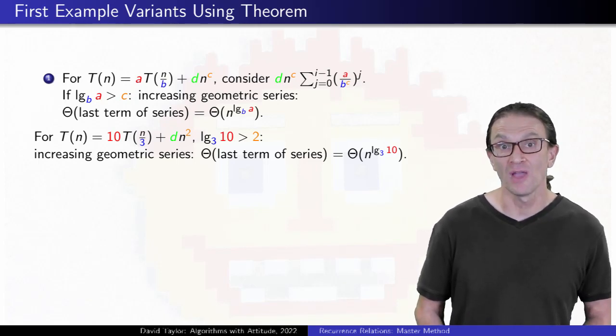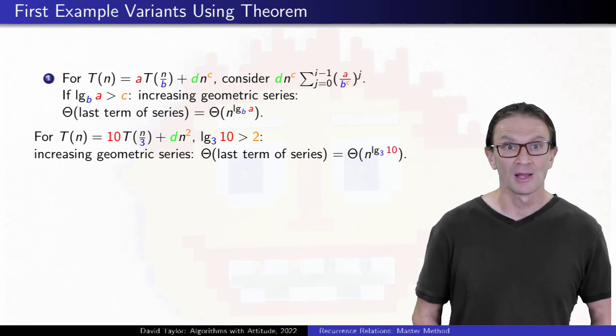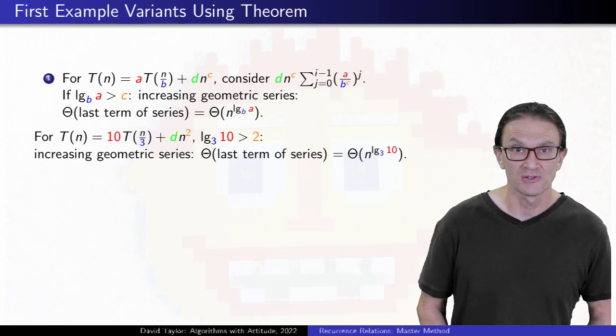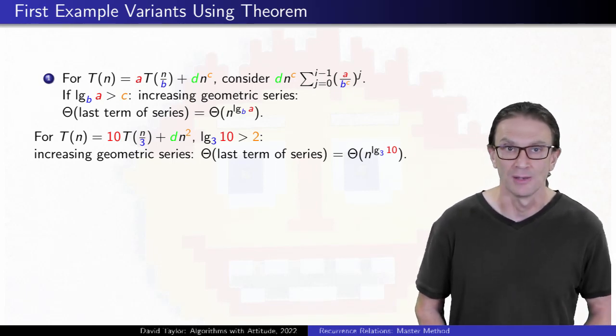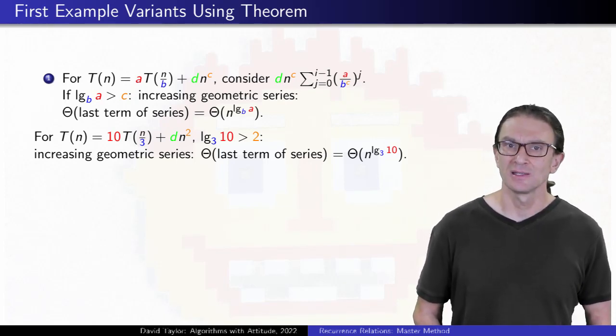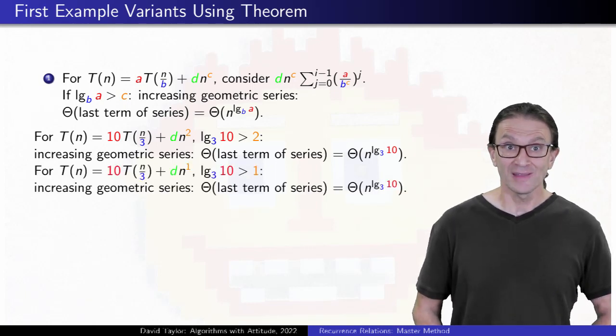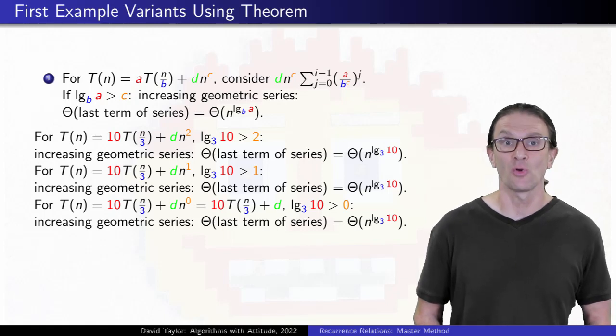Here, compare log base B of A, which is log base 3 of 10, which is 2 point something, against 2. 2 point something is bigger, so the recurrence has run time n to the 2 point something, or n to the log base 3 of 10. What happens if that function at the end gets smaller? With the linear term, we get that same order of growth. Even with just a constant term, we get the same order of growth.